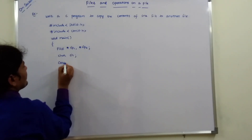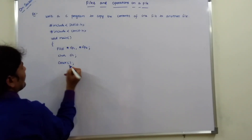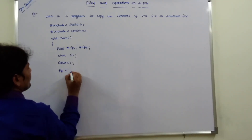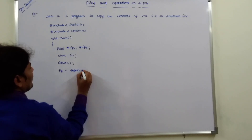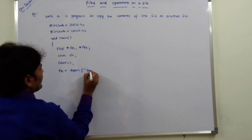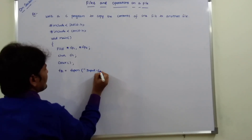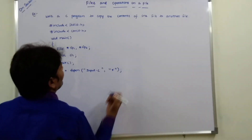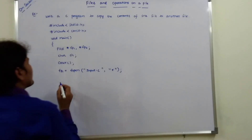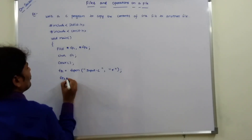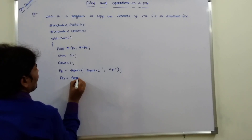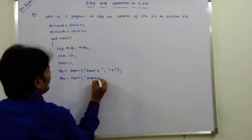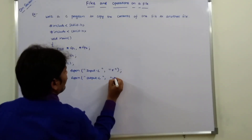So clrscr. Then file pointer fp1 is equal to fopen, file name is input.c, mode is read mode. Next, file pointer fp2 is equal to fopen output.c, comma write mode.